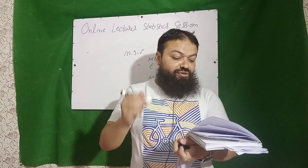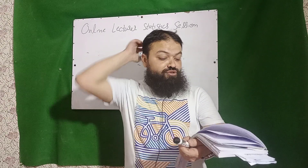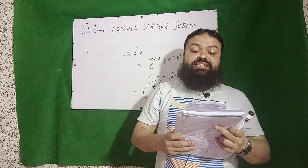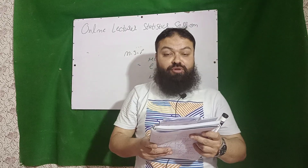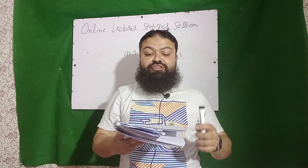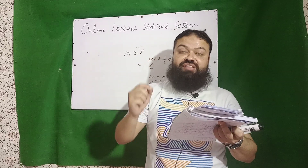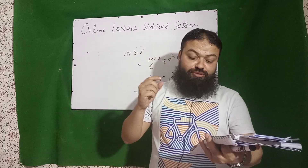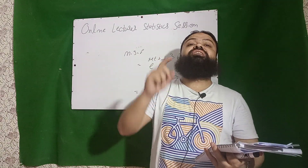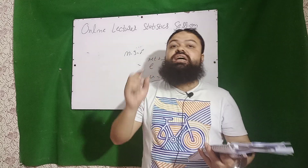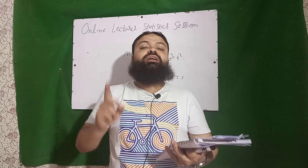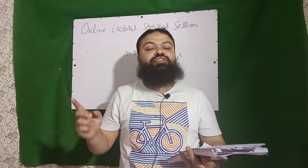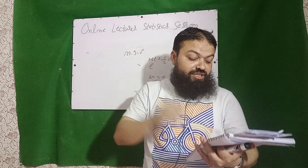Negative binomial is also called Pascal distribution, introduced by Pascal. Negative binomial distribution is always positive. Geometric distribution is also called the distribution of memoryless property. In discrete distributions, geometric is the only one with the memoryless property; in continuous distributions, exponential is the only one with the memoryless property. Mean and variance are equal in Poisson distribution, and mean and standard deviation are equal in exponential distribution.